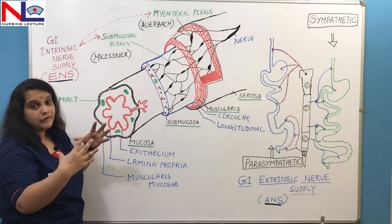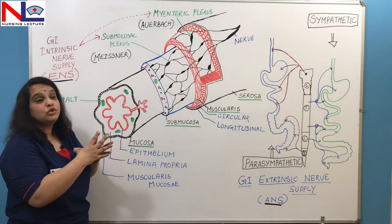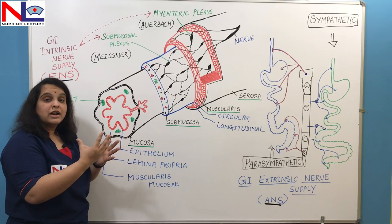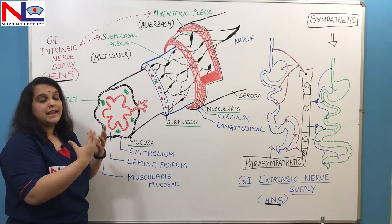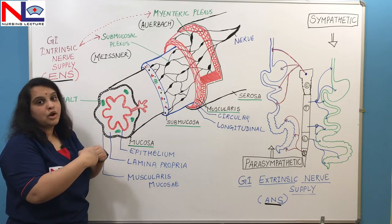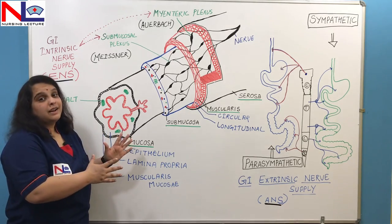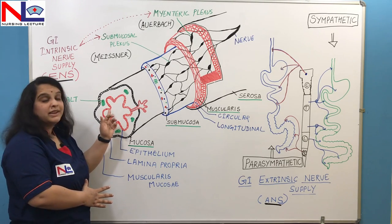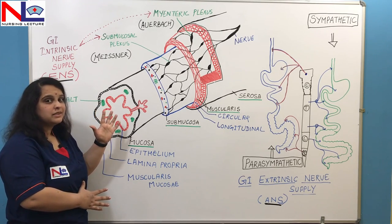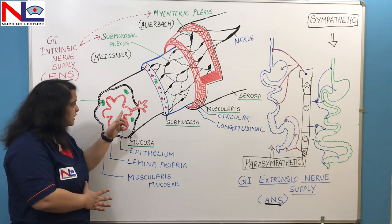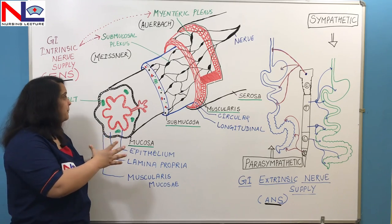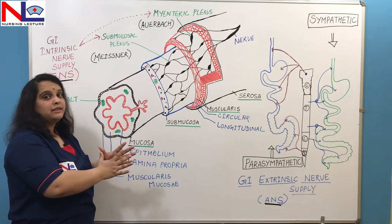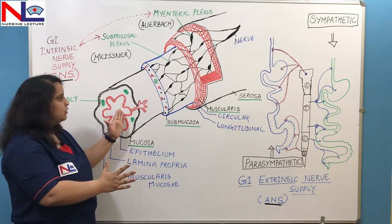After the lamina propria is a thin layer of smooth muscle called the muscularis mucosa. This muscularis mucosa throws the mucosa into folds directly into the lumen, increasing the surface area of the whole mucosal lining. Greater surface area means more proper mixing and more absorptive cells are exposed to food content to absorb all the nutrients. These are the three sub-layers within the mucosa.